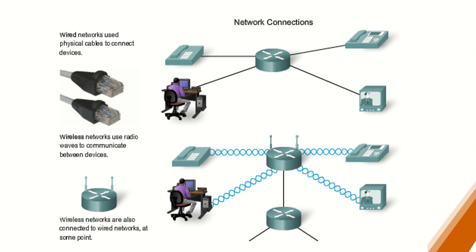In terms of network connections, as mentioned, there are two classic types. In the upper part, we have what is called a wired network or wired connection — it uses physical cables to connect devices. This is the type of connector used when we want a wired connection; for example, from your desktop, it is connected to your router via a wired cable.